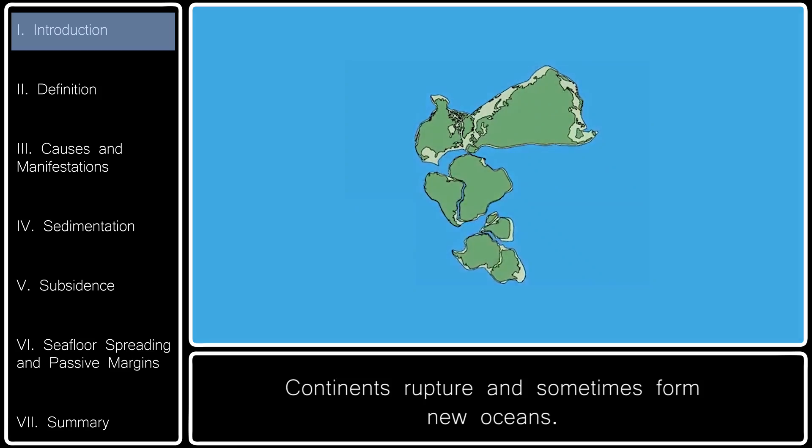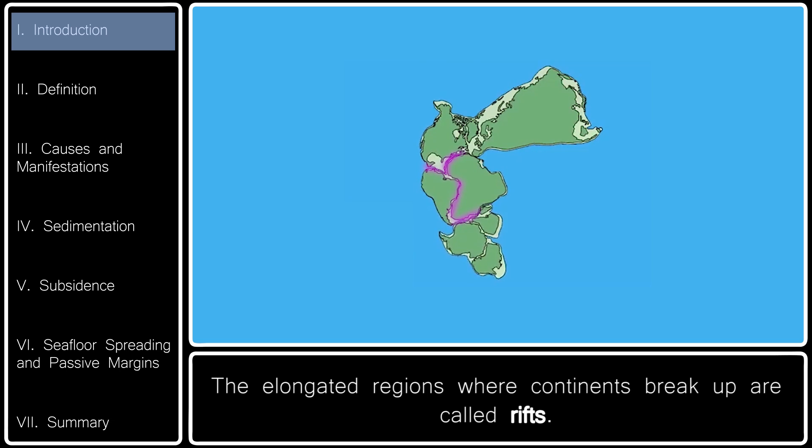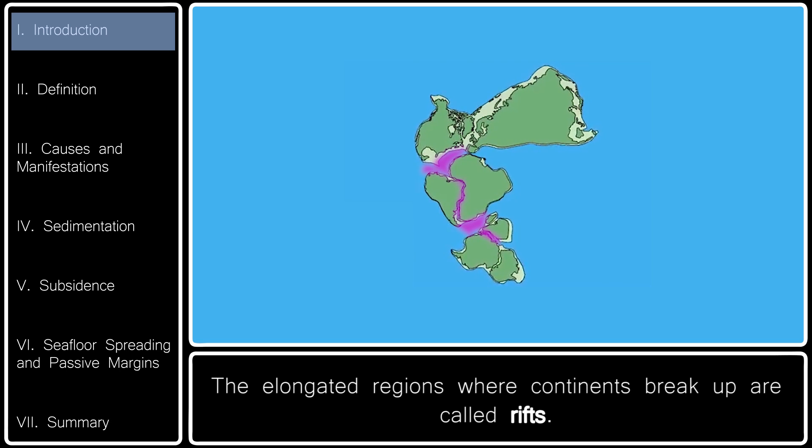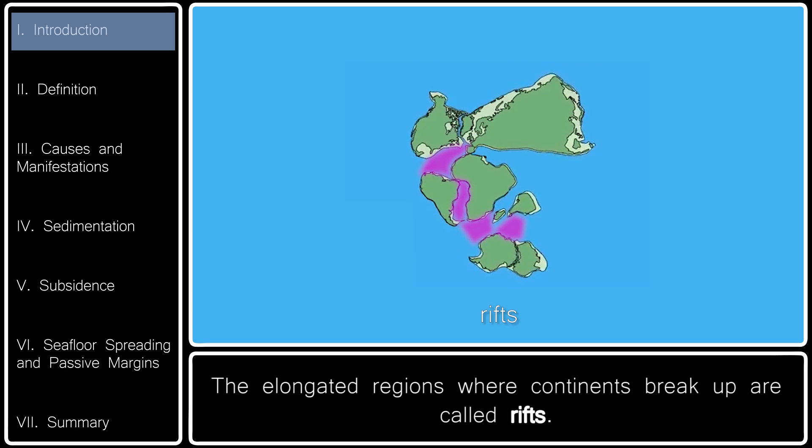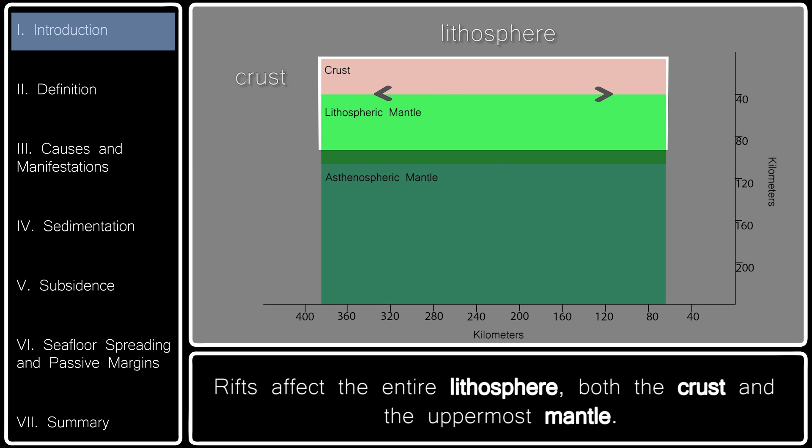Continents rupture and sometimes form new oceans. The elongated regions where continents break up are called rifts. Rifts affect the entire lithosphere, both the crust and the uppermost mantle.